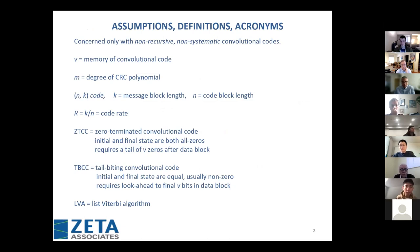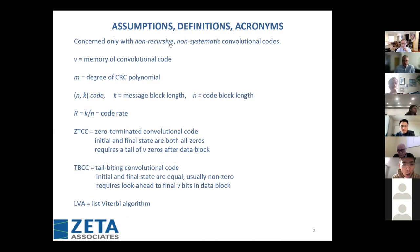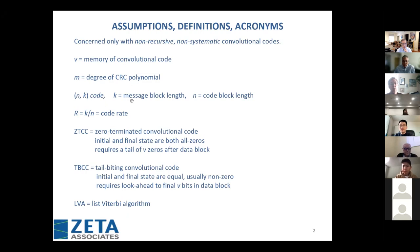Before my outline, let me go over the assumptions and algorithms throughout this talk. I'm concerned only with non-recursive, non-systematic convolutional codes, specifically rate one-half. I'm using the UCLA notation: V is the memory of the convolutional code, M is the degree of the CRC polynomial, and we talk about (N,K) codes. ZTCC stands for zero-terminated convolutional codes, where the initial and final states are both all-zeros, requiring a tail of V zeros after the data block.